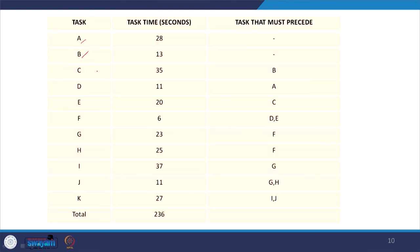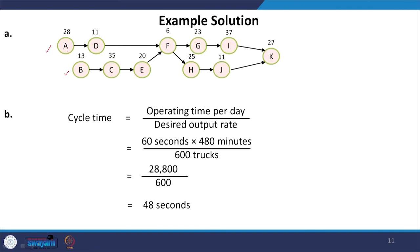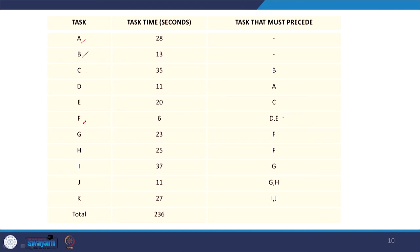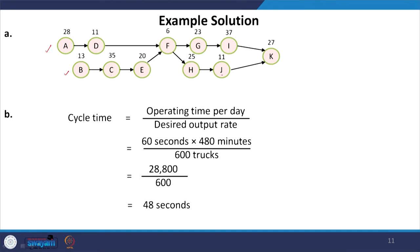For task C, B is the precedence; for D, A is the precedence. For E, the precedence is C; for F, both D and E are required. For task J, both G and H must be completed first. For K, both I and J are required — K can only be completed when I and J are both done. In this way, the precedence diagram is prepared.